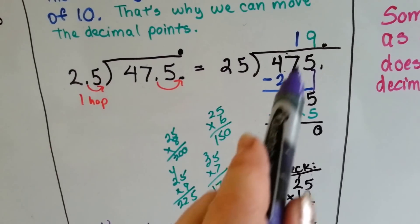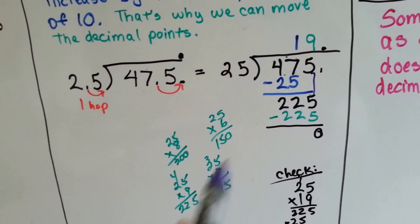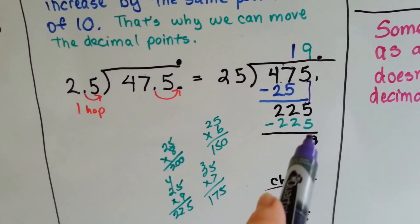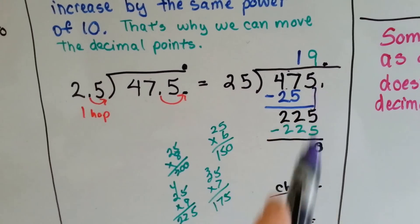And I came up with 9. 25 times 9 is 225, so I put it up there. I already know it's 225 because I already did my math. And then I get a 0 remainder. And the answer is 19.